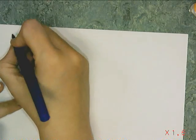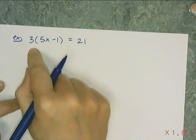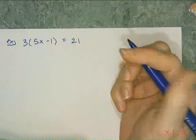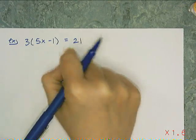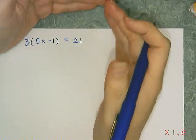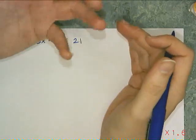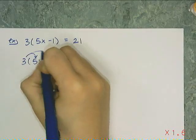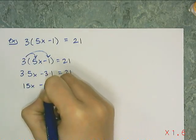Now let's look at one where you can't do that shortcut at all — it would be evil and wrong to try. This problem has parentheses and mixed operations: multiplication and subtraction. Your brain should be thinking: that's a distribution problem. So for 3 times the quantity (5x minus 1) equals 21, I distribute the 3: I get 3 times 5x minus 3 times 1 equals 21, which gives 15x minus 3 equals 21.